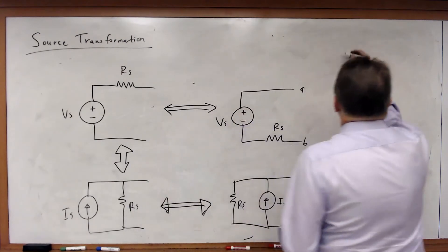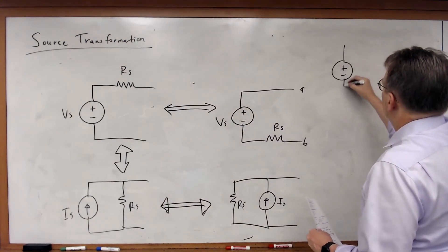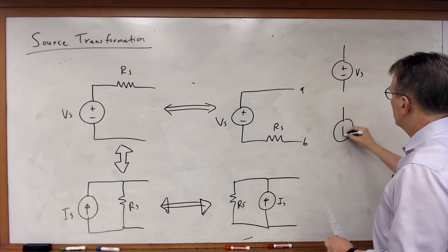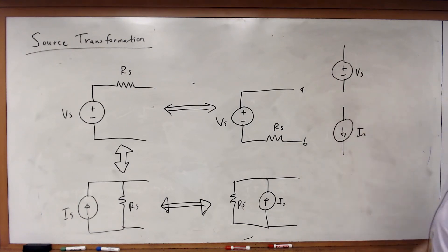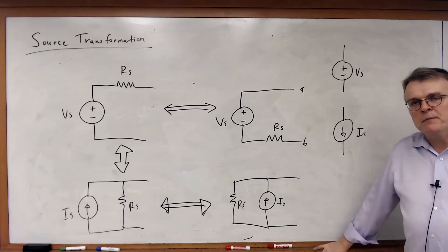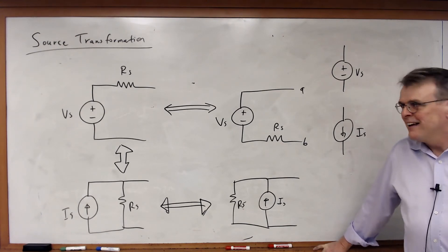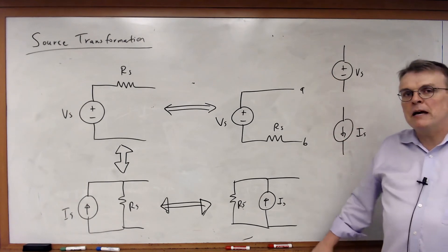And they'll say, well, Professor Holman, you've got this voltage source. Why doesn't the current source do that? And what I always tell them, first of all, sources are not resistors. Passive sign convention applies to Ohm's law.